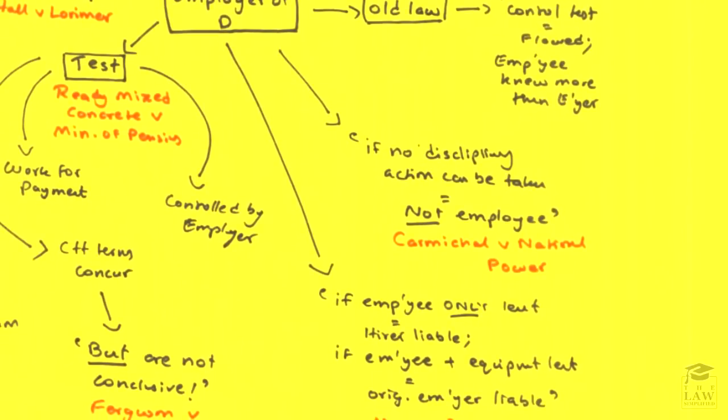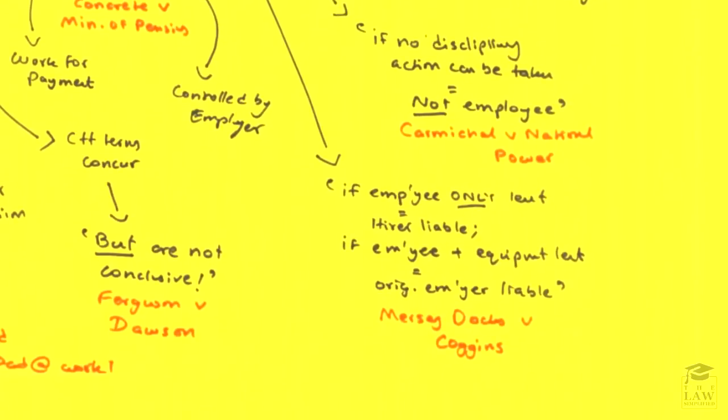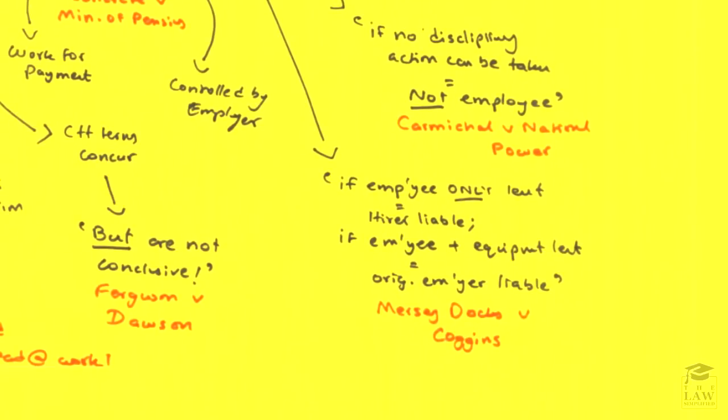Another mechanism can be seen in Carmichael and National Power: if there is no disciplinary action that can be taken by the defendant employer, then most probably the person who committed the tort is not an employee. So if you cannot be punished, fired, reprimanded, or fined by your employer, that necessarily means there might not be as great a degree of control over you as might be the case if you were an employee — and you might therefore be a contracted party.